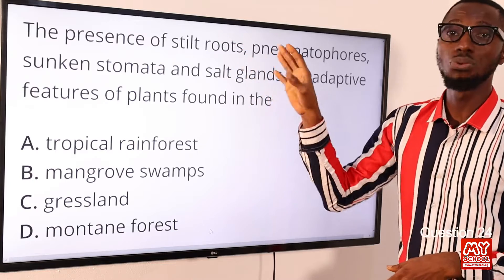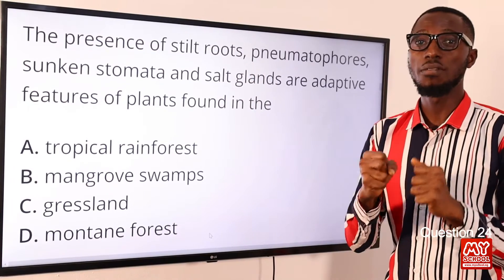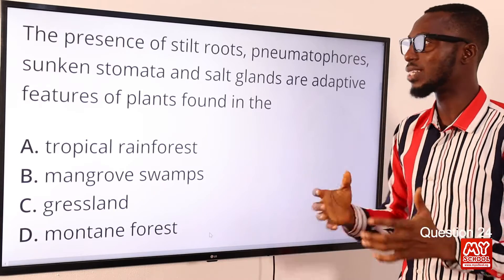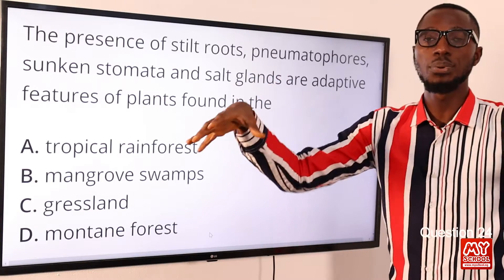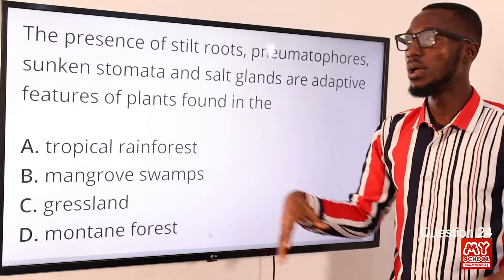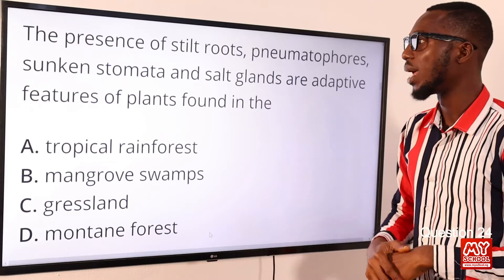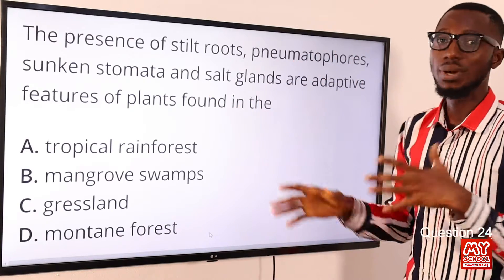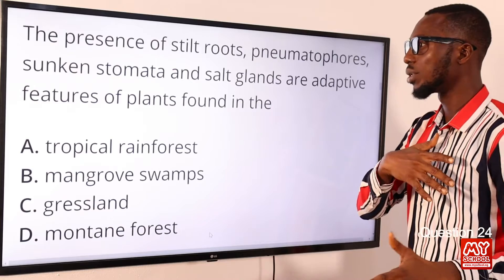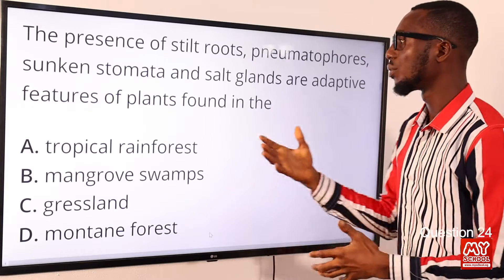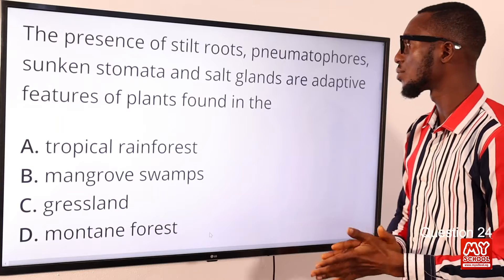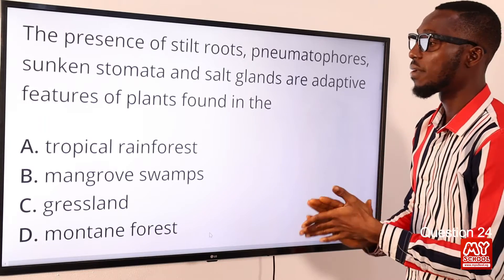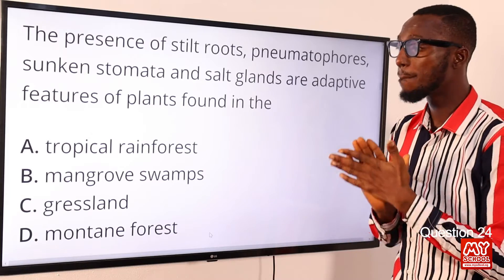The roots cannot go deep because the substratum is not strong enough to carry large trees, so these roots are well spread over a wide coverage to support the plants. The sunken stomata and salt glands are for osmotic regulation — controlling the amount of water lost to the environment and excreting excess salt. These are adaptive features of plants found in option B, mangrove swamps.